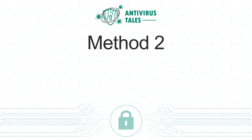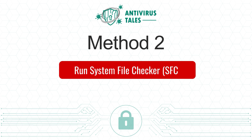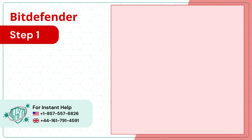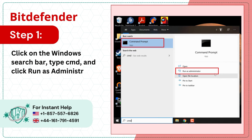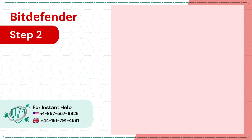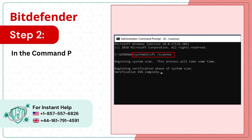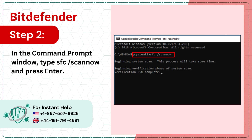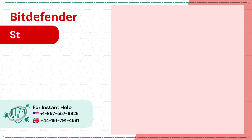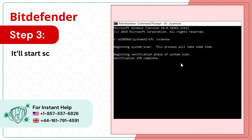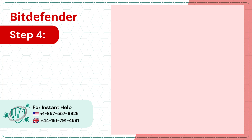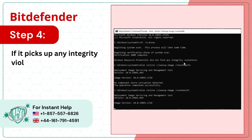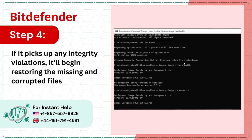Method 2: Run System File Checker (SFC). Step 1: Click on the Windows search bar, type CMD, and click Run as Administrator to open Command Prompt. Step 2: In the Command Prompt window, type 'SFC /scannow' and press Enter. Step 3: It will start scanning the system, which will take some time. Step 4: If it picks up any integrity violations, it will begin restoring the missing and corrupted files.